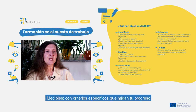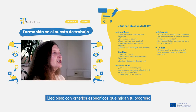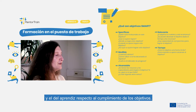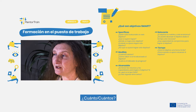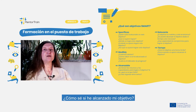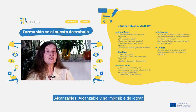Measurable — with specific criteria that measure your and your apprentice's progress toward the accomplishment of the goals. How many or how much? How do I know if I have reached a goal? What is my indicator of progress? Achievable.